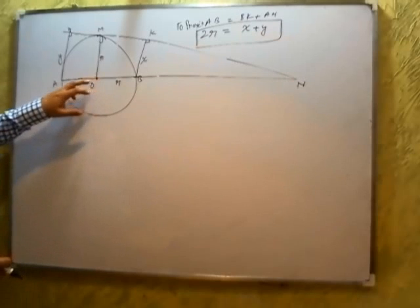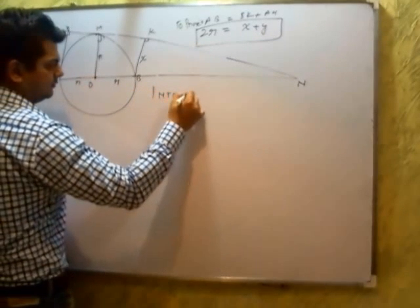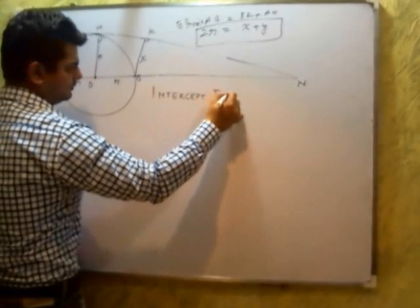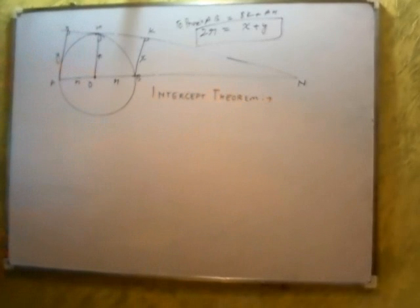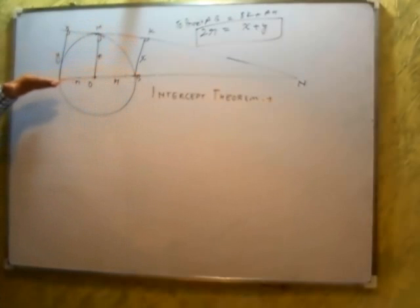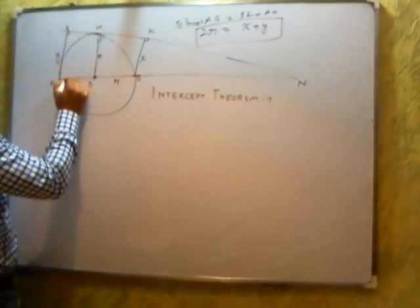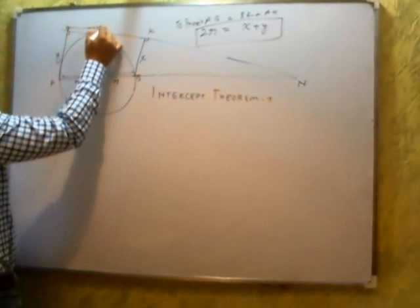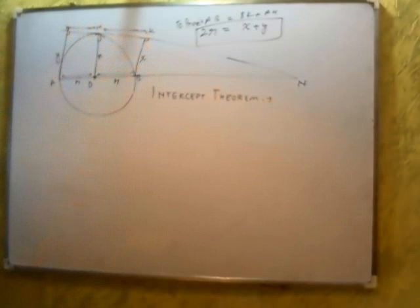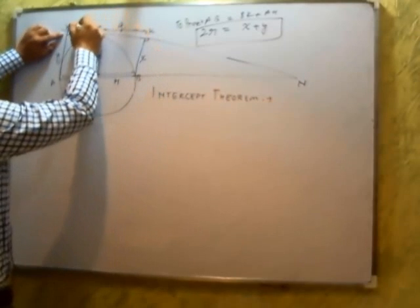If you see the intercept theorem, it says: three parallel lines, when a transversal cuts them into equal ratio, then any other transversal would be cutting them into equal ratio. That means this is the midpoint of line HK. If this is Q, then this is Q. I hope I am clear.